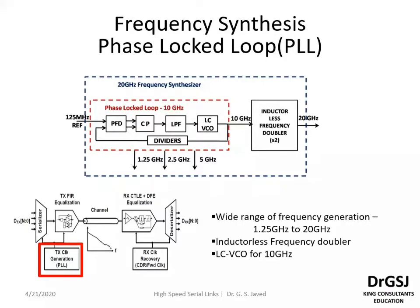A 125 megahertz reference frequency is taken as a reference. An LC VCO working at 10 gigahertz is operated, and its divided version is given to compare against the 125 megahertz reference frequency. The PFD measures the difference between the two and then generates fast or slow signals — also called the up and down signals — for the charge pump. These time-based signals are then converted into a voltage signal.